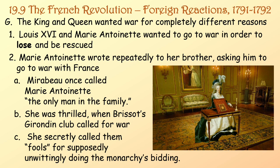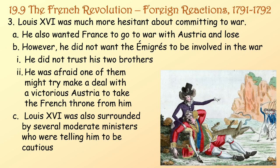The king and queen wanted war for completely different reasons as well. Louis XVI and Marie Antoinette wanted to go to war in order to lose and be rescued. Marie Antoinette wrote repeatedly to her brother asking him to go to war with France — Mirabeau once called her 'the only man in the family.' She was thrilled when Brissot's Girondin club called for war, and secretly called them fools for supposedly, unwittingly, doing the monarchy's bidding. Louis XVI was much more hesitant — he also wanted France to lose to Austria, but he didn't trust the émigrés, fearing one of his brothers might make a deal with a victorious Austria to take the French throne from him.